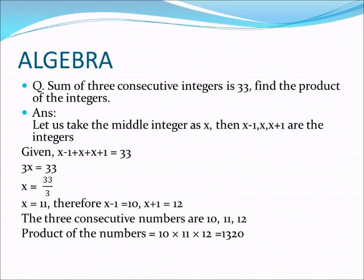Now we can solve this equation by adding the like terms. All x terms are positive: x plus x plus x gives 3x. The constants minus 1 plus 1 equal 0, so the left side simplifies to 3x. Therefore 3x equals 33. Taking 3 to the opposite side as division, x equals 33 divided by 3, which is 11.